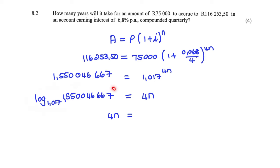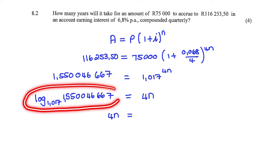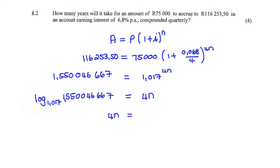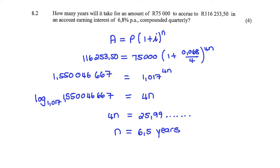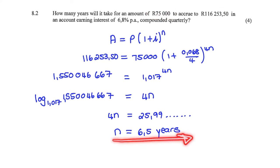So that will be a log with a base of 1.017 and the value inside the log is the decimal I found before. I enter this expression on my calculator to find the value of 4n, which is equal to 25.99. I divide that value by 4, so this investment will grow from 75,000 Rand to the accumulated value in 6.5 years.